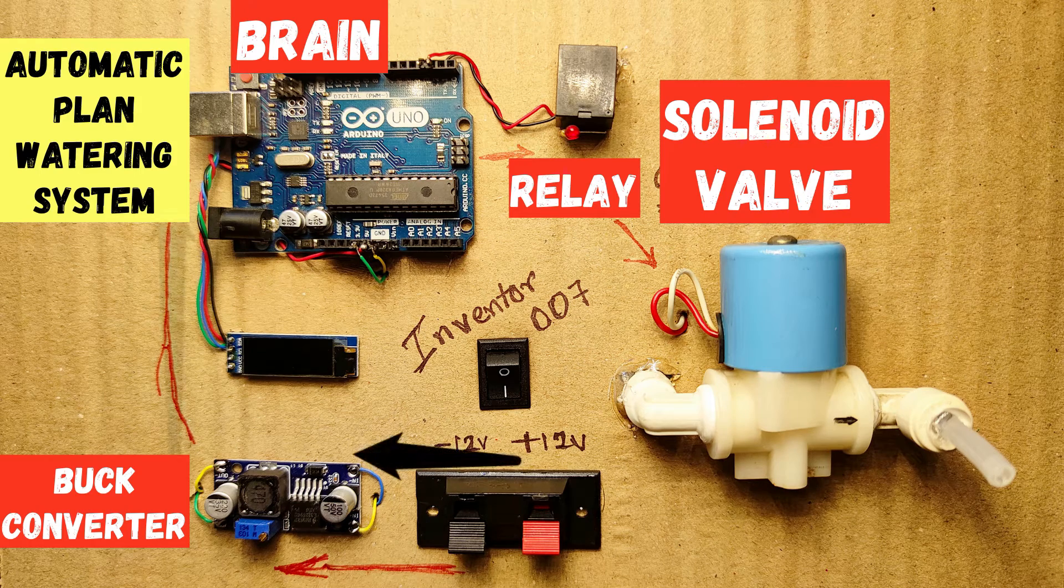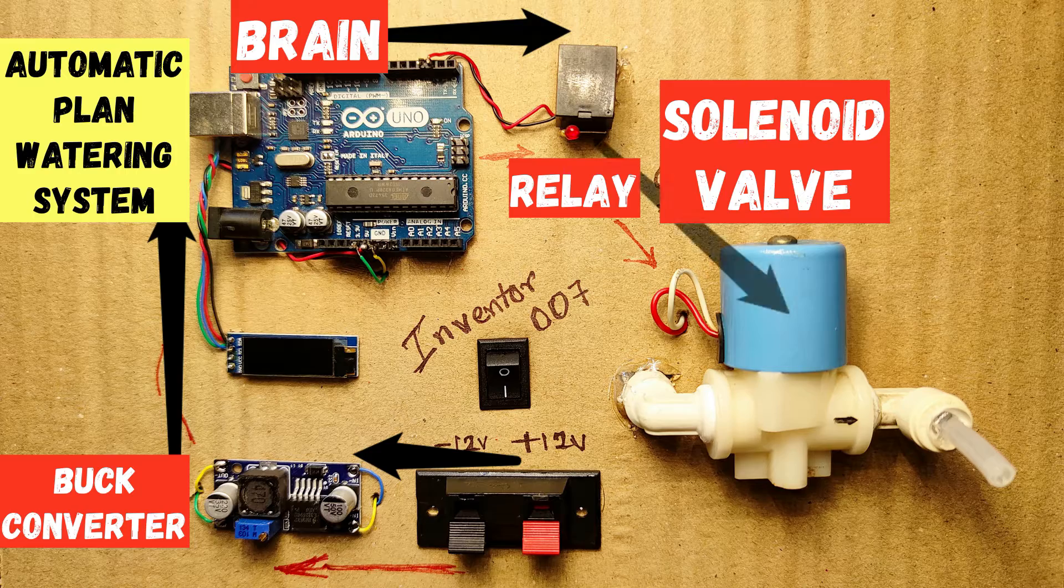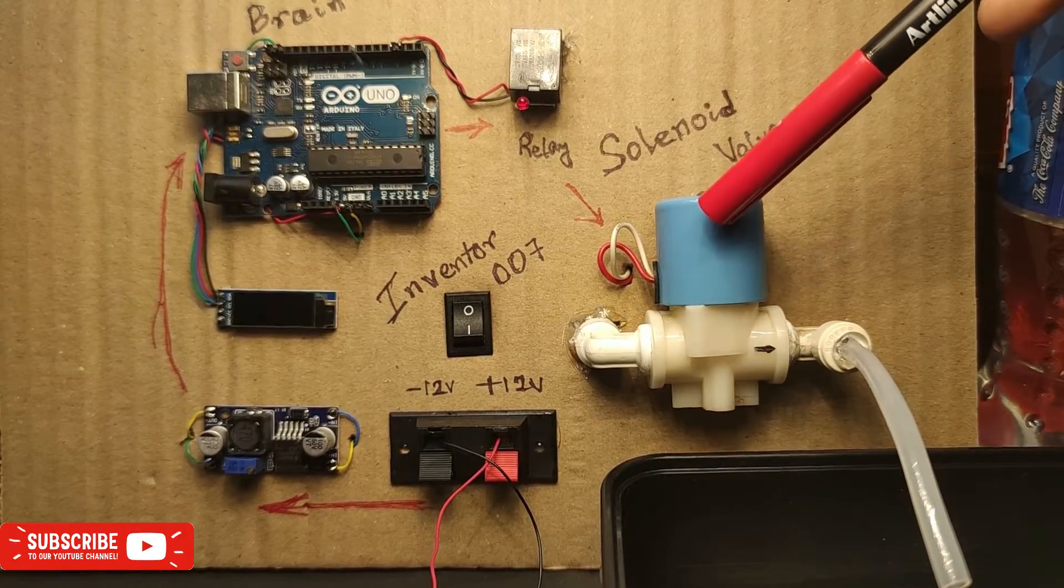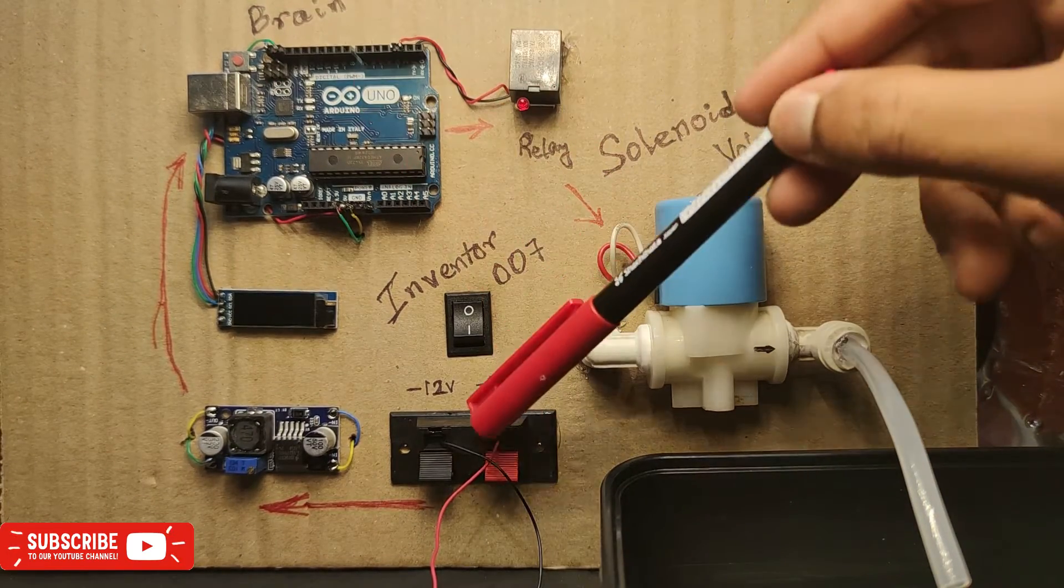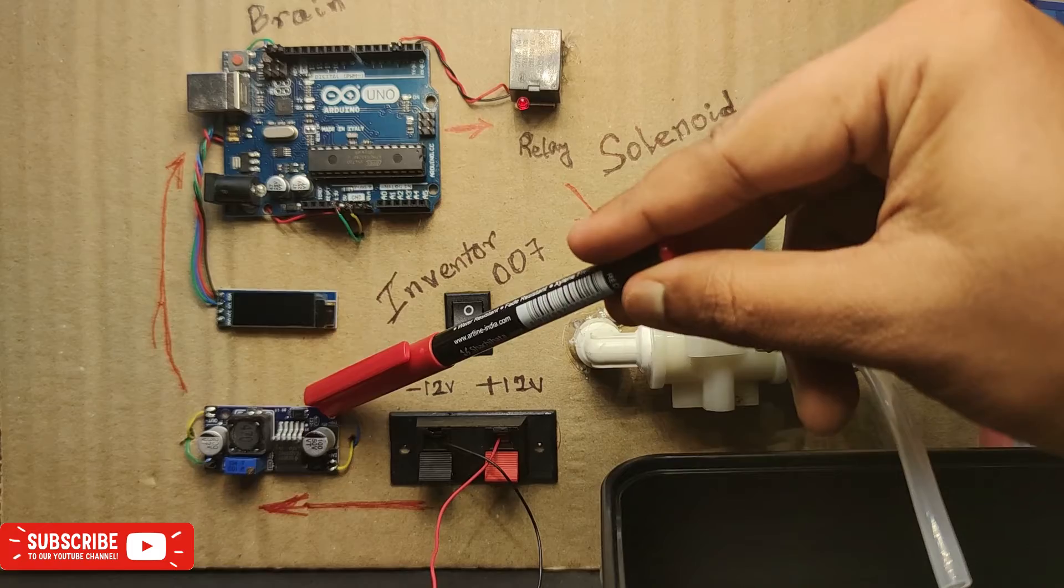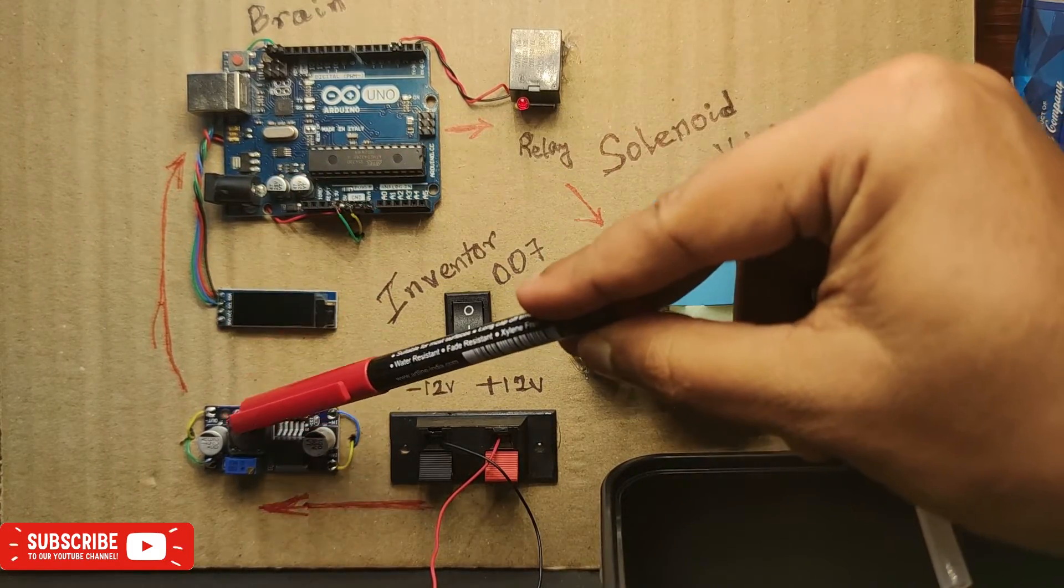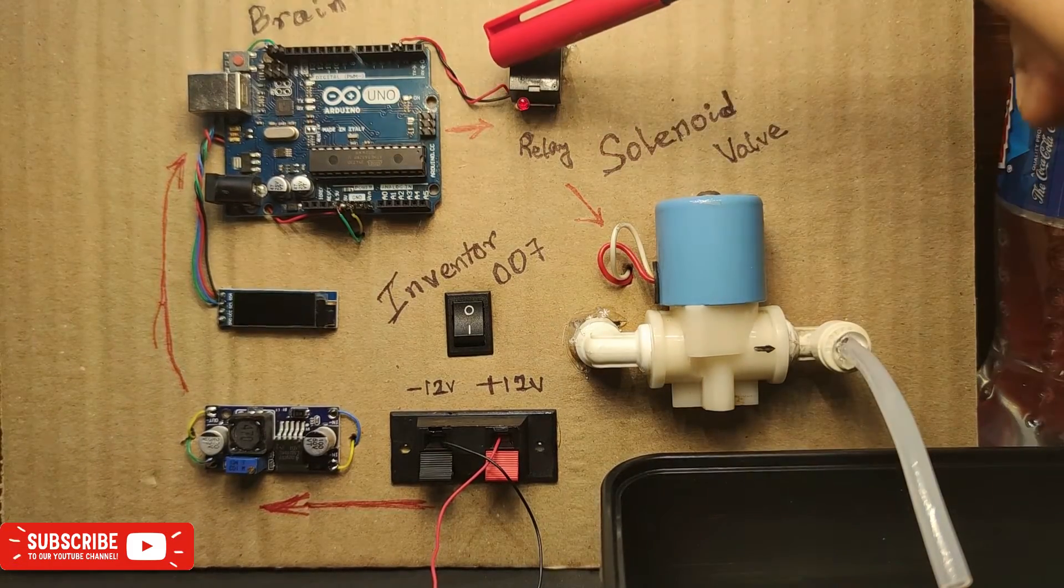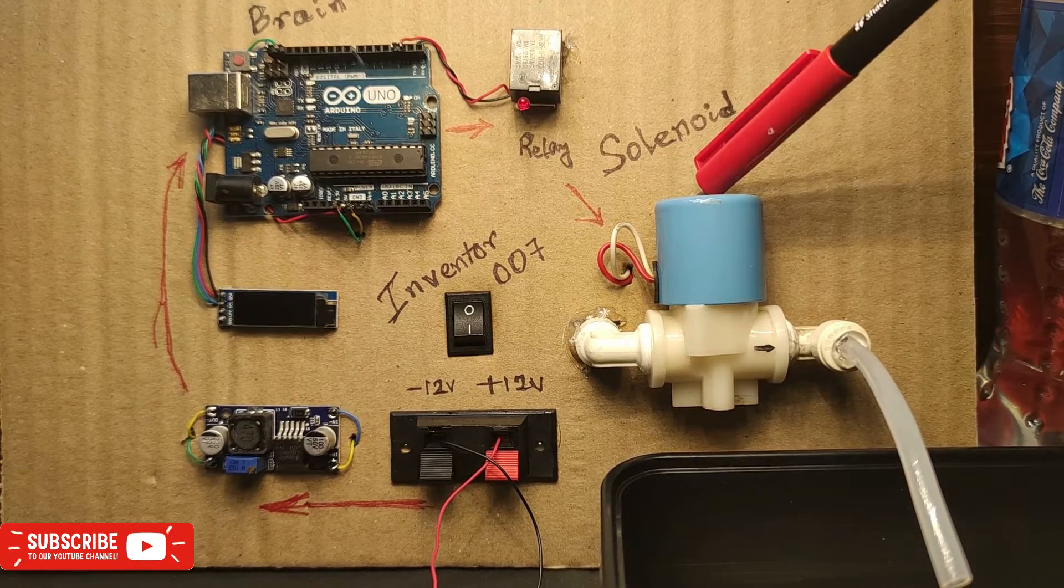Hello guys, today I will be making this simple system which will automatically water any plant. In this system I have used a solenoid valve which is controlled by this Arduino. I have been providing 12-volt power supply which will be converting to 5 volts for the Arduino, because Arduino requires 5 volts. This Arduino will control this relay and this relay will activate this solenoid valve.